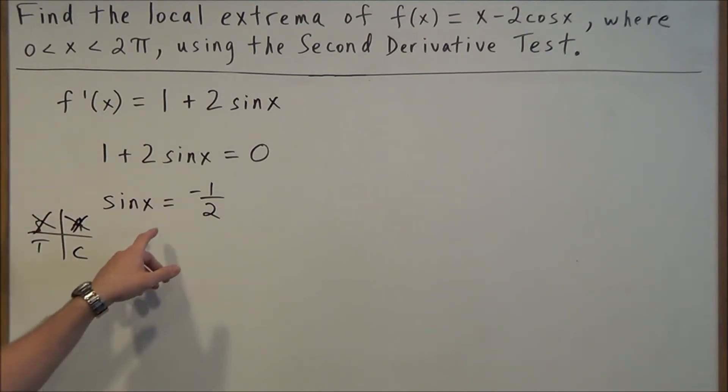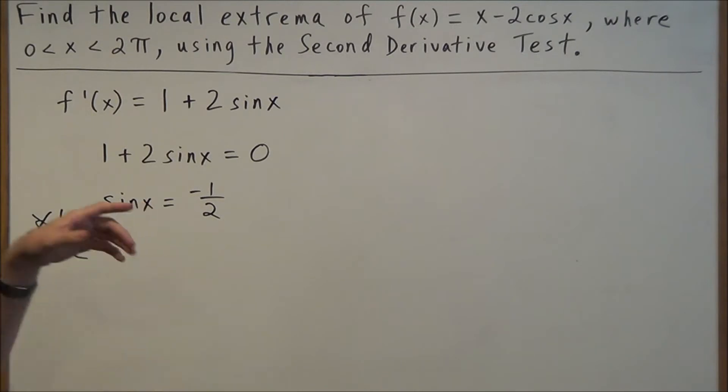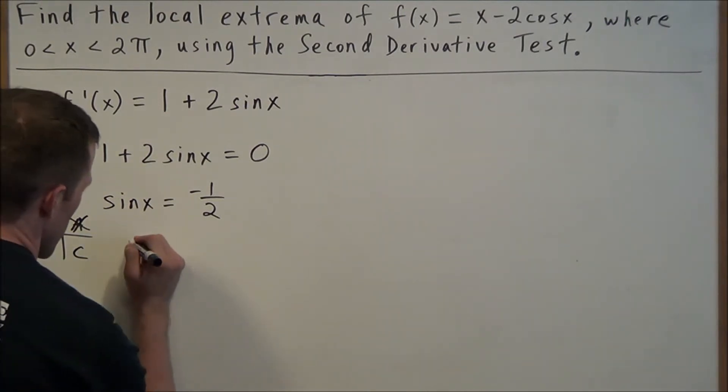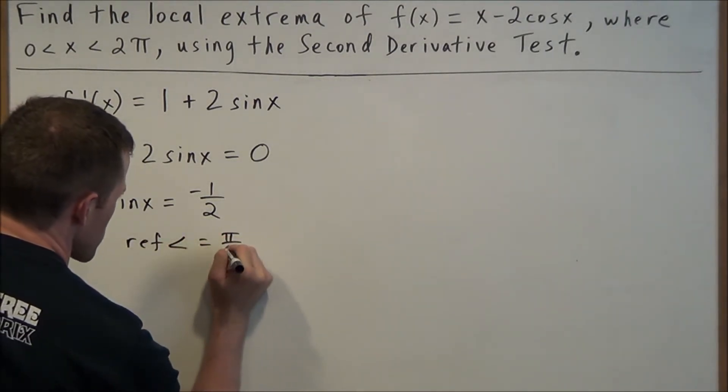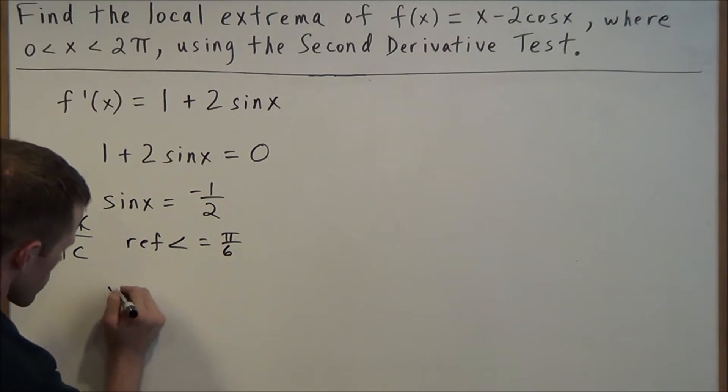So the solution to this equation will fall somewhere in quadrants 3 or 4. To find those particular solutions, we need to find our reference angle. And sine of x equals positive 1/2 when x is 30 degrees or π/6 radians. So our reference angle will be π/6.